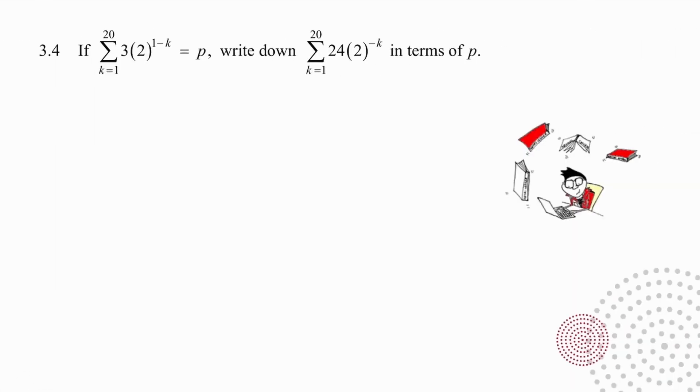3.4 is a problem solving question. We are not being asked to find the value of p, so don't waste your time doing that. It does not help. What we have been asked to do is to express the expression on the right side in terms of p, which means we need to make that expression look like the one on the left in order to be able to see what's happening.